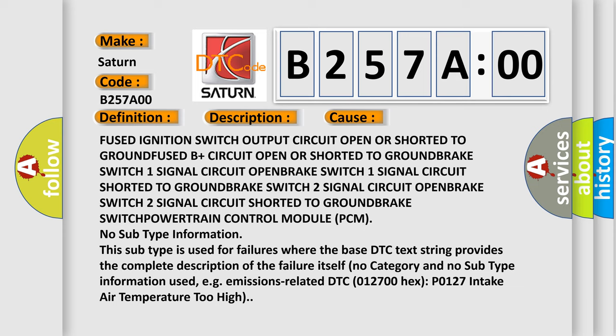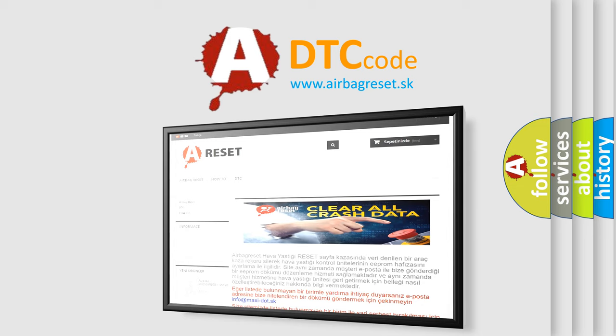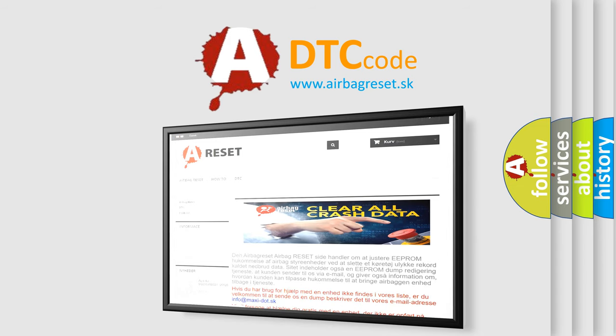No subtype information. This subtype is used for failures where the base DTC text string provides the complete description of the failure itself. No category and no subtype information used, e.g., emissions-related DTC 012700 hex, P0127 intake air temperature too high. The Airbag Reset website aims to provide information in 52 languages. Thank you for your attention and stay tuned for the next video.